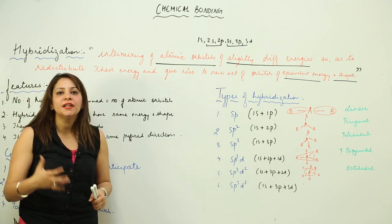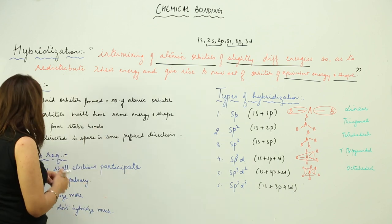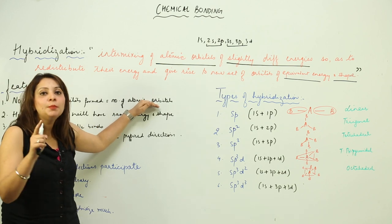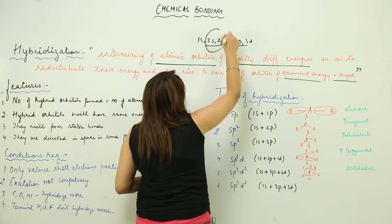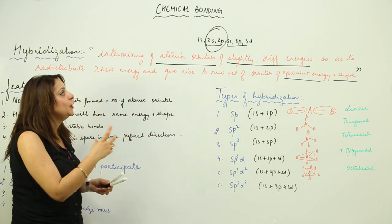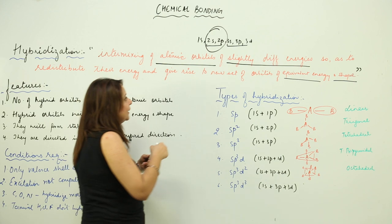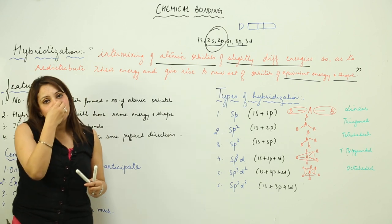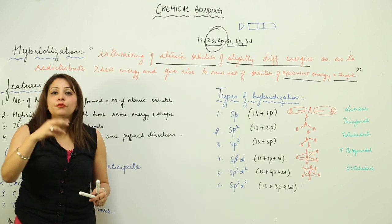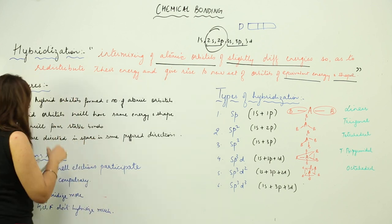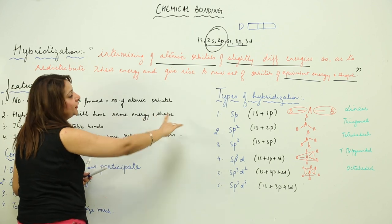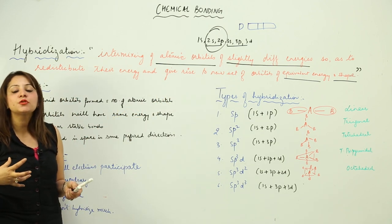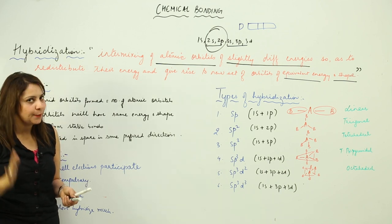When performing hybridization, certain rules must be followed. The number of hybrid orbitals will always equal the number of atomic orbitals that get mixed. For example, if 2s and 2p intermix — s has one orbital and p has three orbitals — so four orbitals mix and give rise to four hybrid orbitals. Hybrid orbitals will always have the same energy and shape.